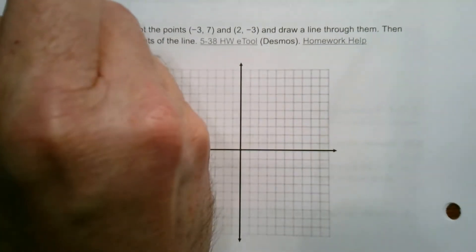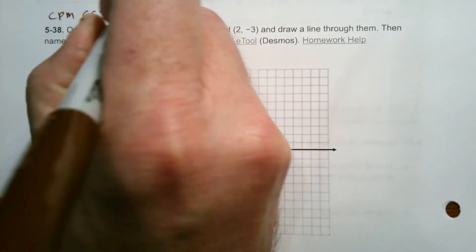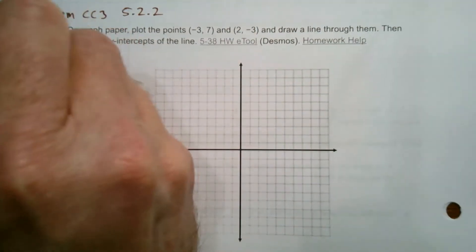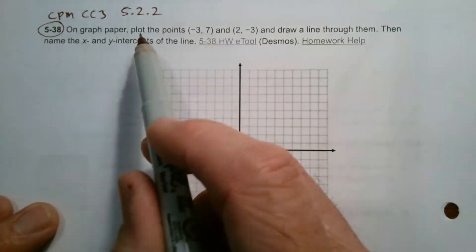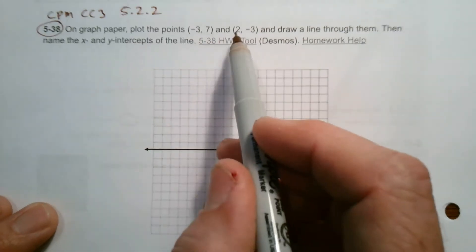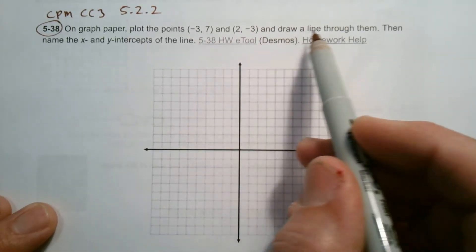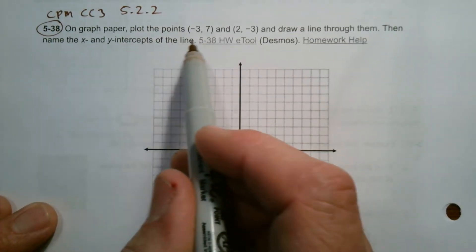So this is CPM course three, and this is section 5.2.2, specifically number 5-38. So it says on graph paper, plot the points negative 3, 7, and 2, negative 3, and draw a line through them. Then name the X and Y intercepts of the line.